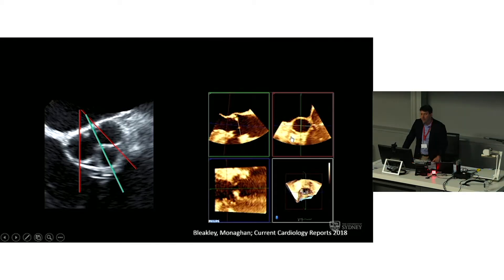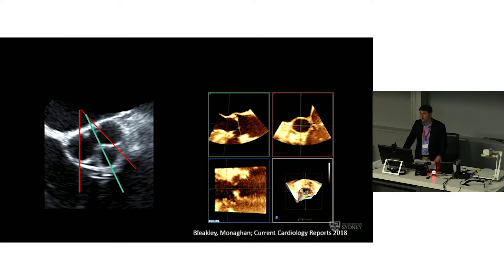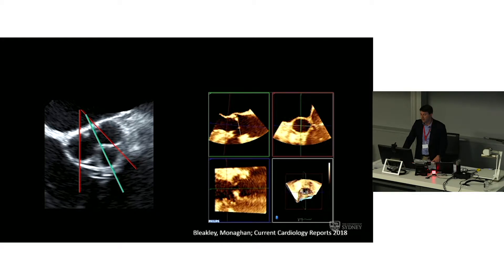When we started with TAVI, we were really looking at using 2D measurements from transthoracic and transesophageal echo. But it's very hard to be sure that we're measuring the true dimensions with two-dimensional echocardiography. 3D echo is certainly much better, and there are centres such as King's College Hospital in London which predominantly use 3D TOE as their modality for sizing the annulus.